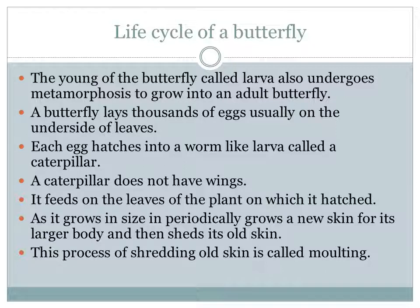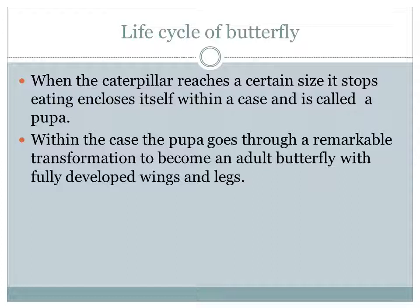Each egg develops into a worm-like larva called the caterpillar. The caterpillar does not have wings. It feeds on the leaves on which it is hatched. When it grows bigger, the old skin is removed from their body, and this process is called the molting process.